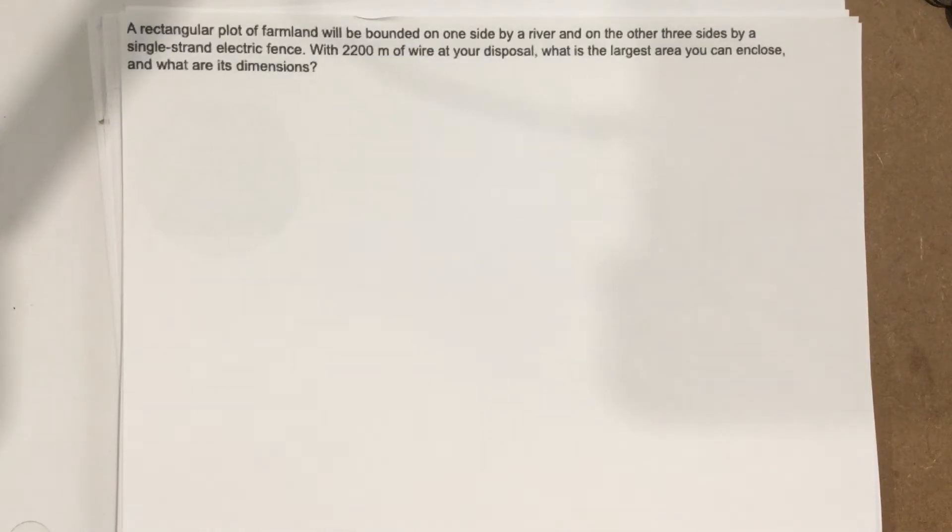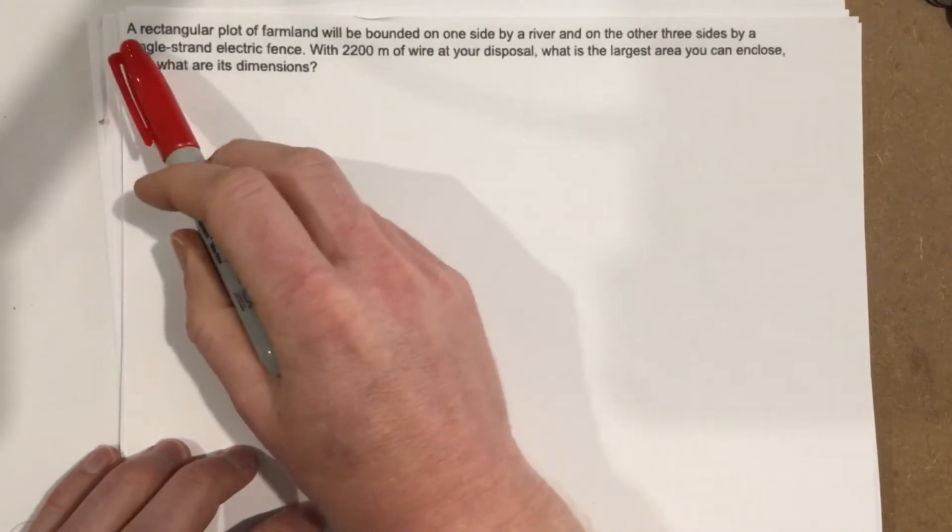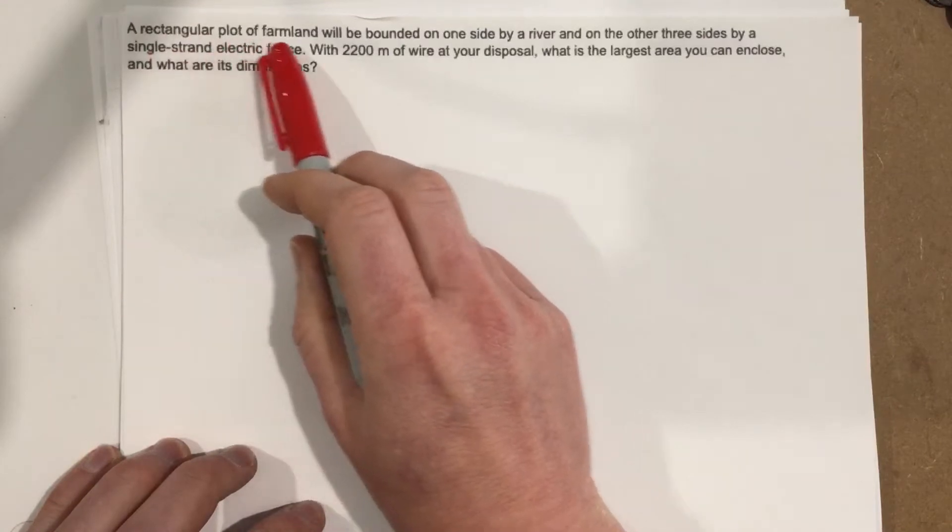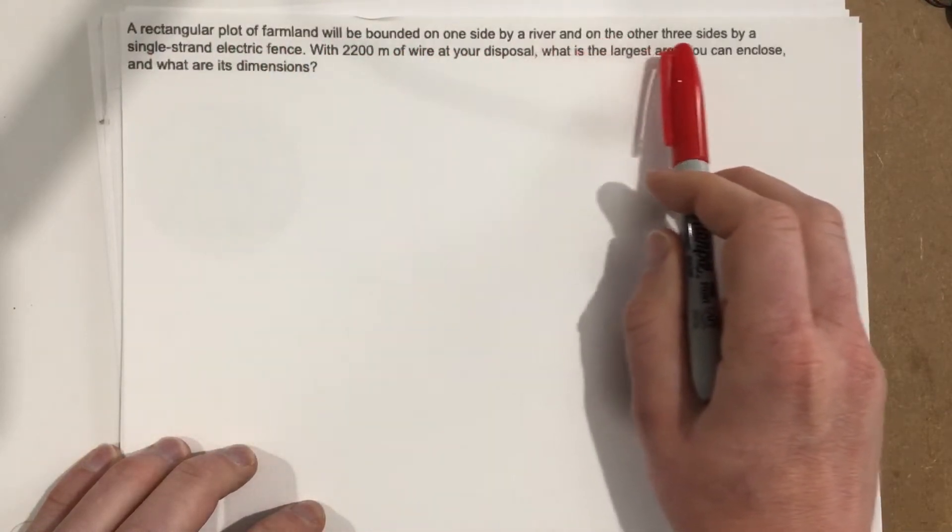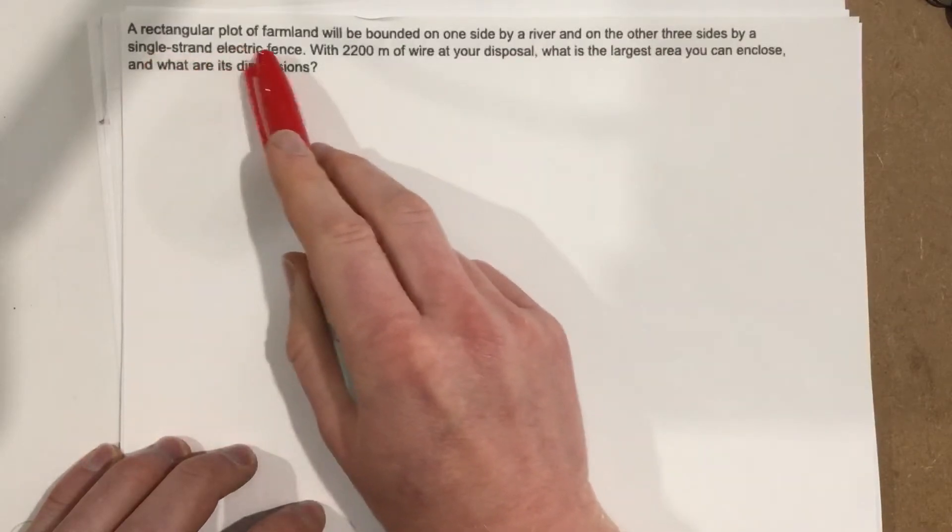This is problem number one from section 4.6. It says a rectangular plot of farmland will be bounded on one side by a river and on the other three sides by a single strand electrical fence.